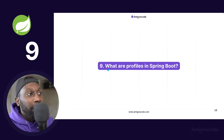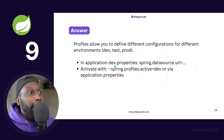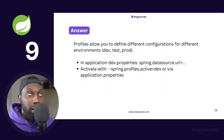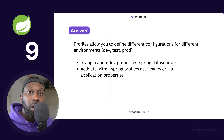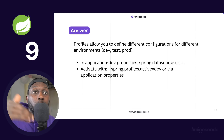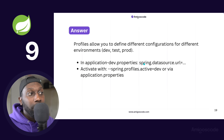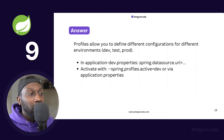Spring Profiles allow you to define different configurations for different environments — development, test, and production. For example, in your local development environment you might connect to a database running on Docker, but when you deploy to AWS you connect to RDS. You can have the same property defined for each profile and simply switch between them.